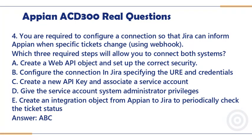a. Create a web API object and set up the correct security. b. Configure the connection in Jira specifying the user and credentials. c. Create a new API key and associate a service account. d. Give the service account system administrator privileges. e. Create an integration object from Appian to Jira to periodically check the ticket status. Answer: A, B, and C.